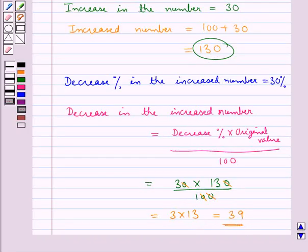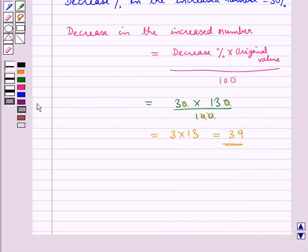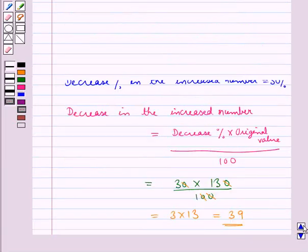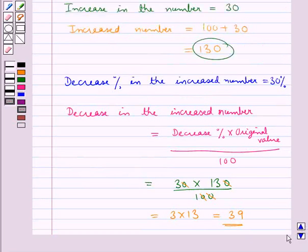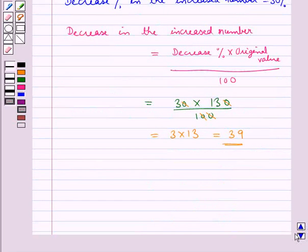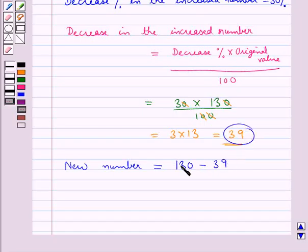So next, the new number would be equal to the increased number, which is 130, minus the decrease in the increased number, that is 39. So 130 minus 39 is equal to 91. This is the new number.